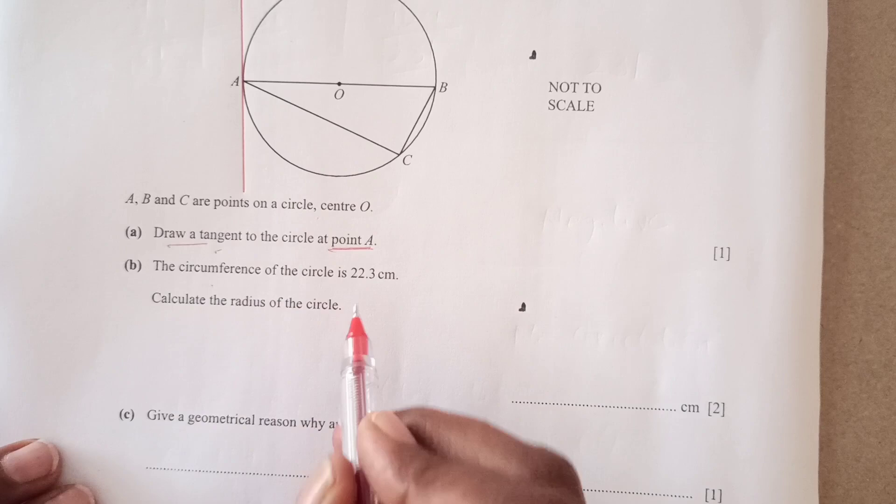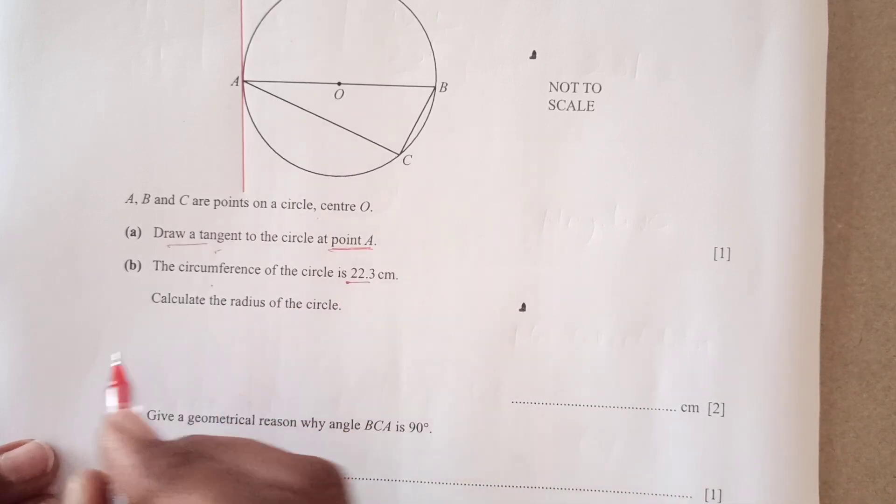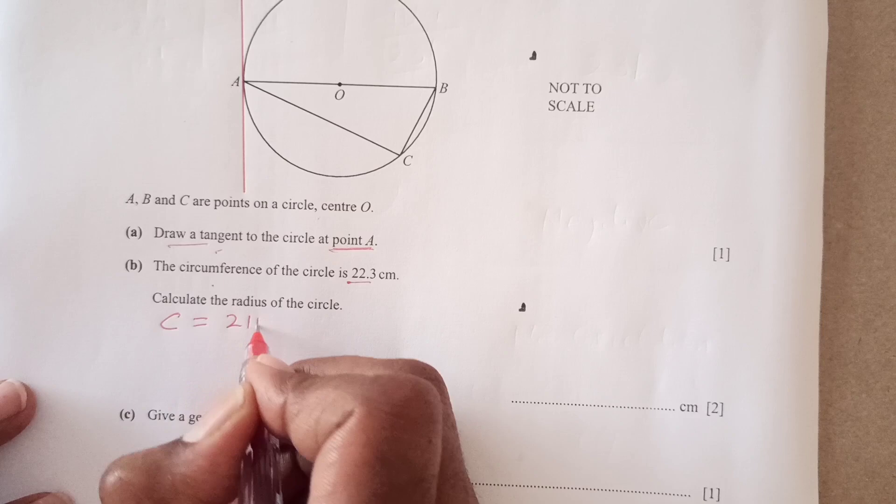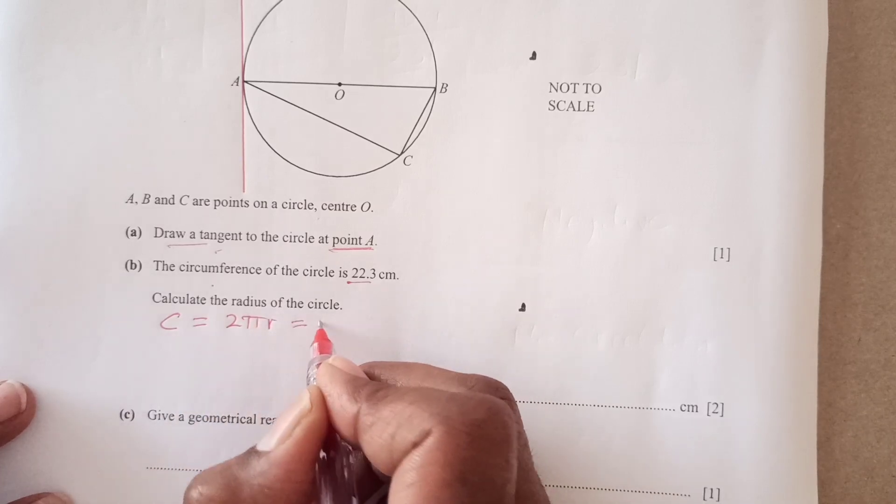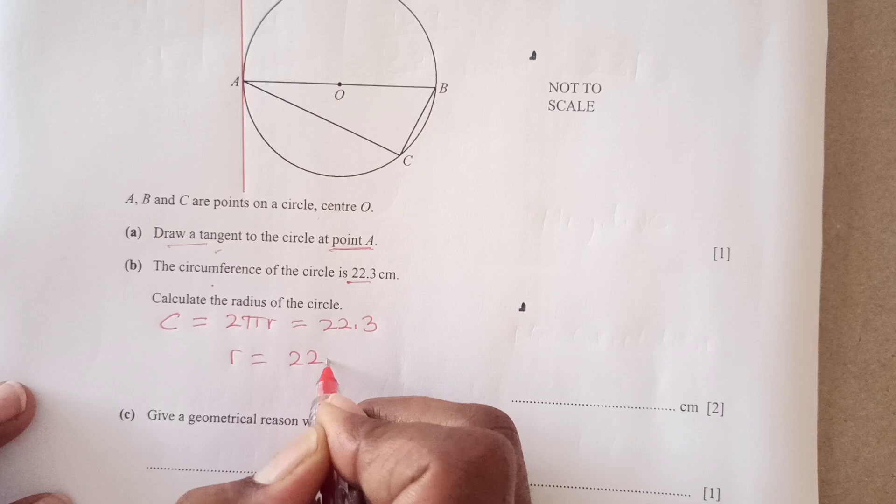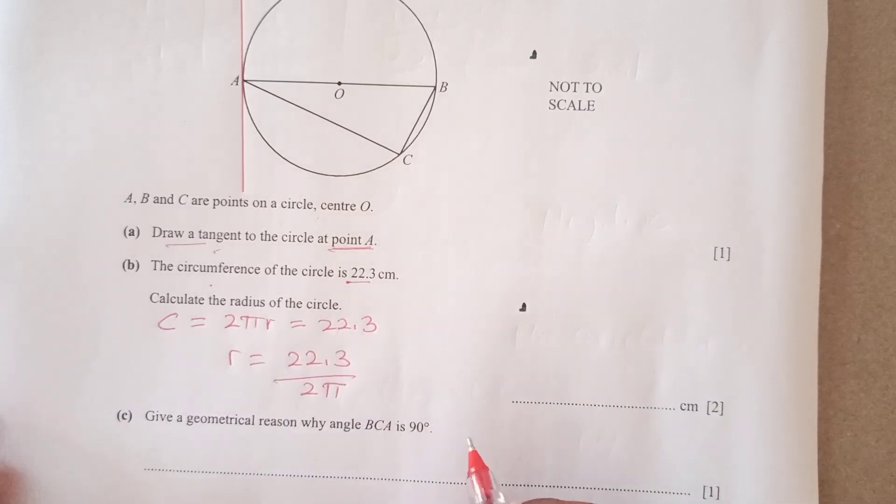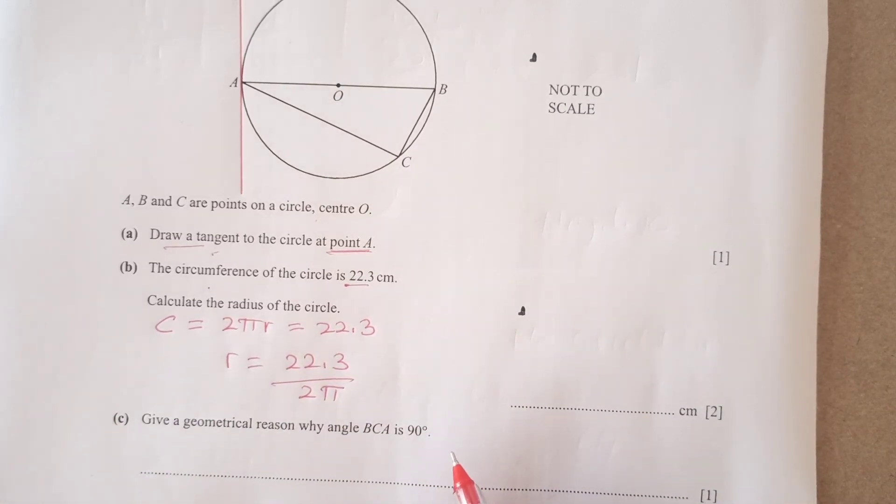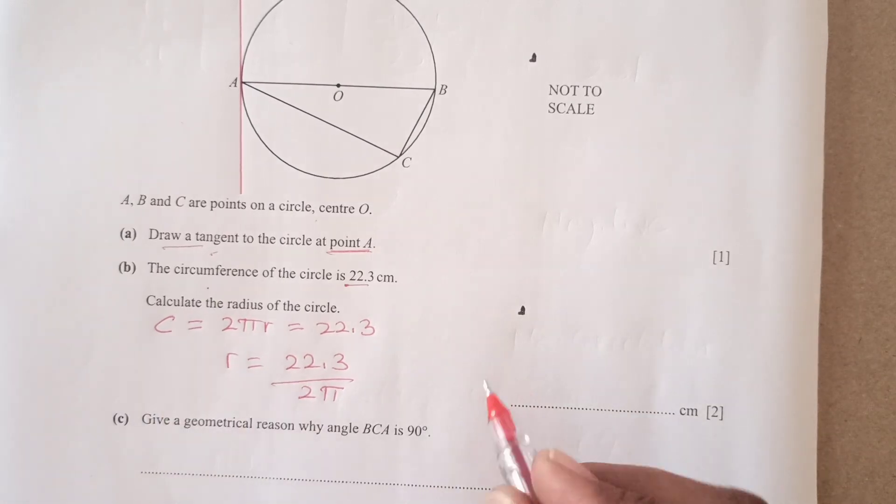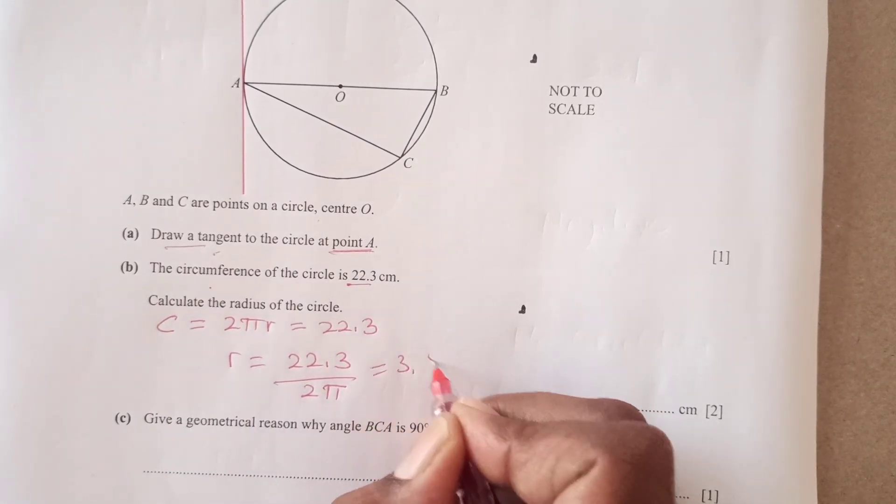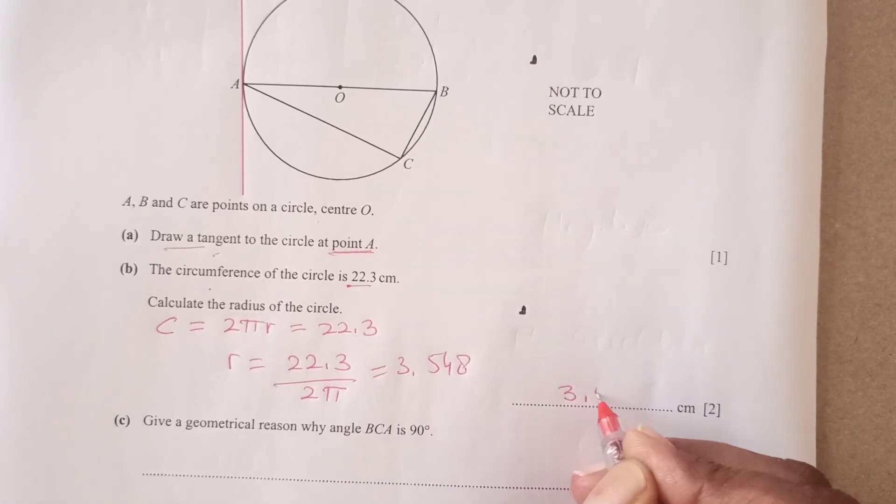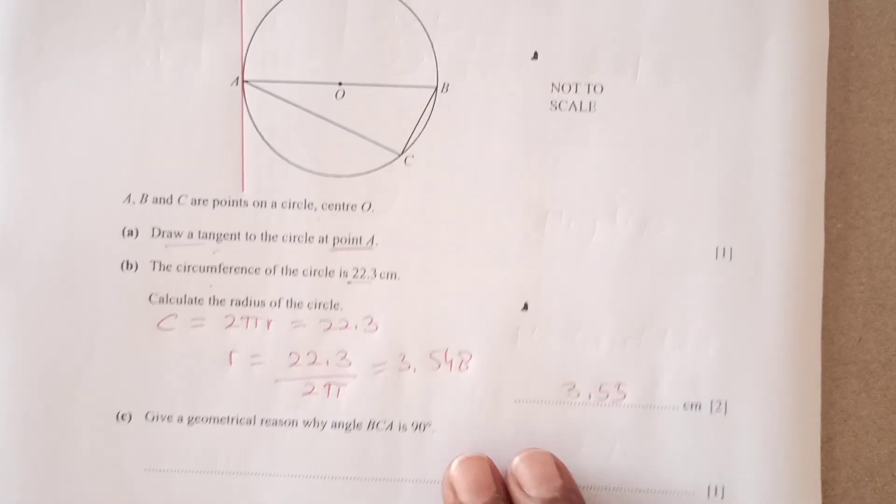The circumference of circle is 22.3. Calculate the radius. Now you know that the circumference is 2 pi r and this is given to us as 22.3. So r is going to be 22.3 divided by 2 pi. So when you calculate this one, this is 3.548. Approximately to 3 significant figures, we will write 3.55, okay?